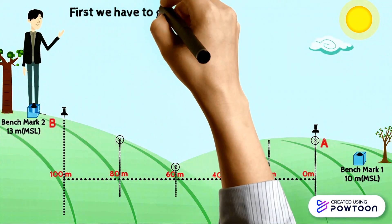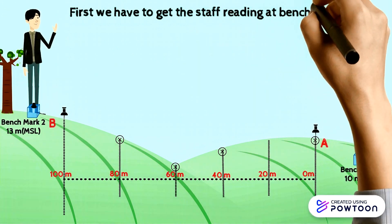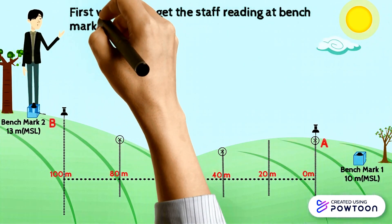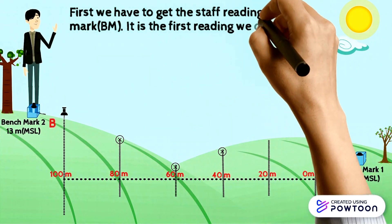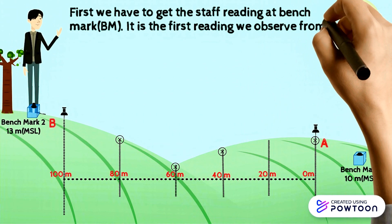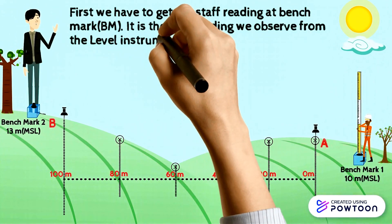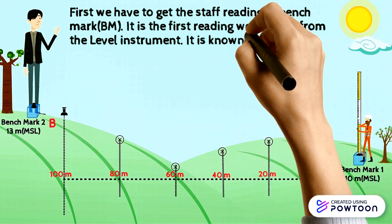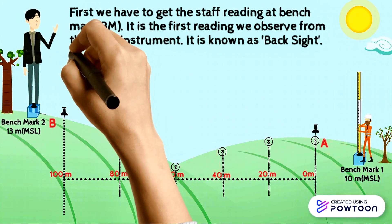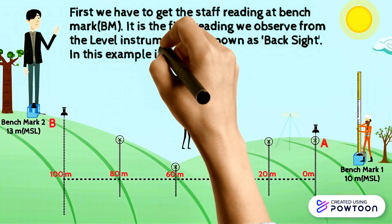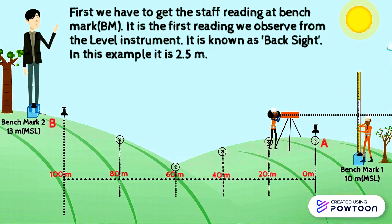First, we have to get the staff reading at the benchmark. It is the first reading we observe from the leveled instrument, and it is known as backsight. In this example, the backsight reading is 2.5 meters.